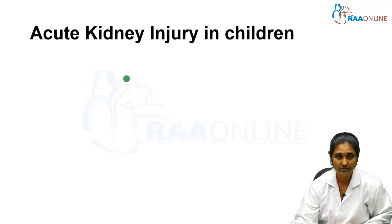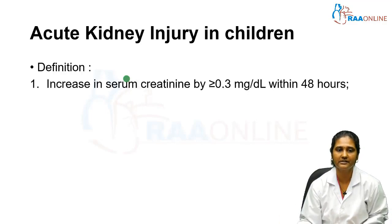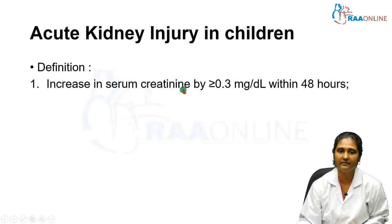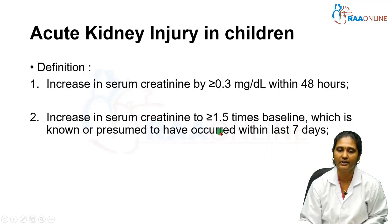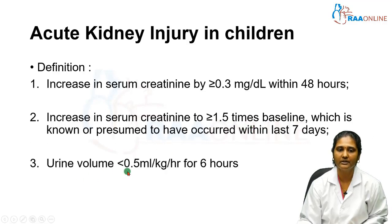By definition, acute kidney injury is an increase in serum creatinine by more than 0.3 mg/dL within 48 hours, or an increase in serum creatinine to more than or equal to 1.5 times the baseline within the last seven days. Additionally, urine volume less than 0.5 mL per kg per hour for six hours also meets the definition of acute kidney injury.